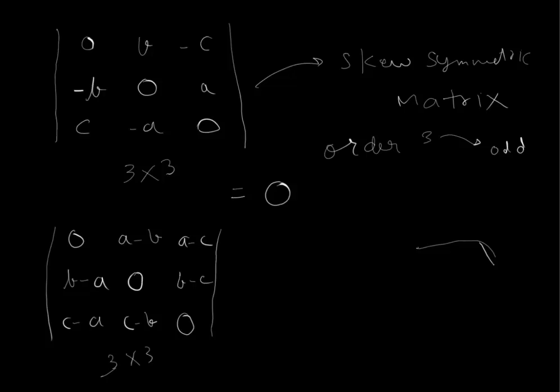All the elements in the principal diagonal are zero and you can see that it satisfies the property of a skew symmetric matrix. And it is a 3 by 3 matrix obviously, so its determinant is going to be 0 because its order is 3 which is odd and it's a skew symmetric matrix.